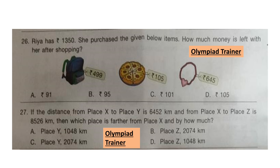Question 26. Riya has Rs. 1350. She purchased the given items. How much money is left with her after shopping? Items are given with price tags. Add all three items and subtract from 1350. The correct answer is option C: Rs. 101.